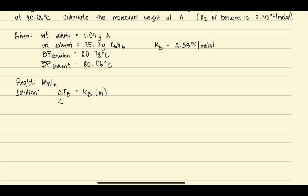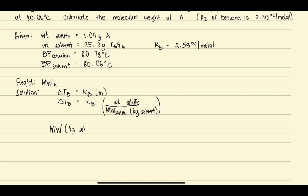Now we know that molality is equal to the weight of the solute over the molecular weight of the solute times the mass of the solvent. To find the molecular weight, we multiply so that: molecular weight times the kilograms of solvent times the change in boiling point is equal to the molal constant times the weight of the solute.